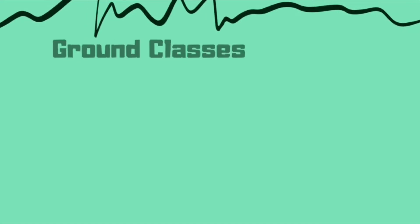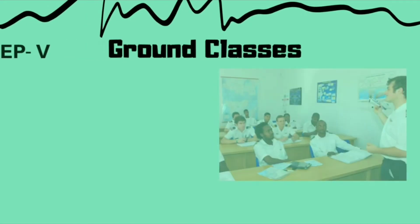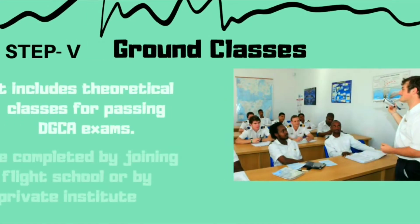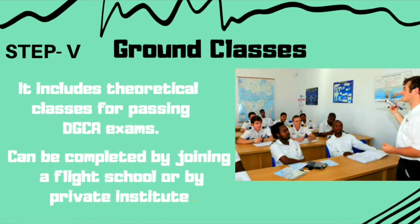Here is step number 5, which is ground training. Ground training includes theoretical classes for the subjects you need to pass during DGCA exams. The ground training can be done in two ways — you can either complete it from a private institute or by joining a flying club.